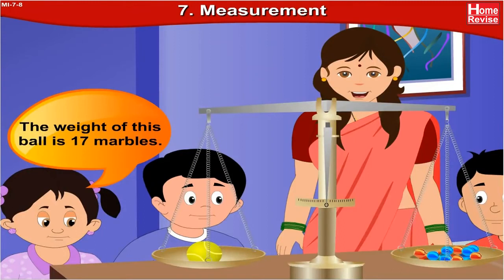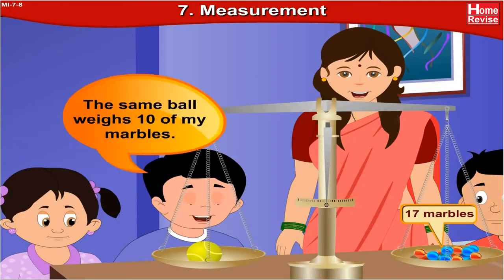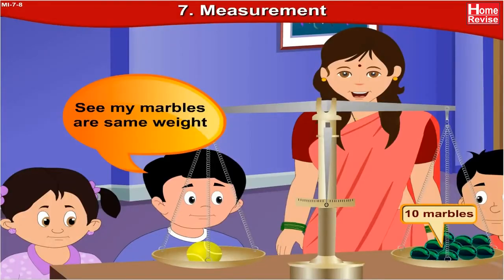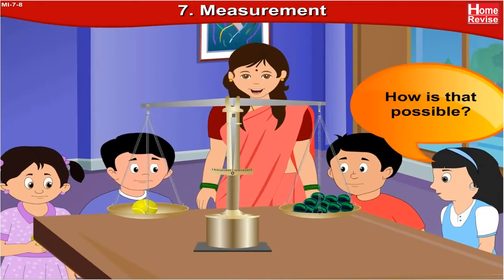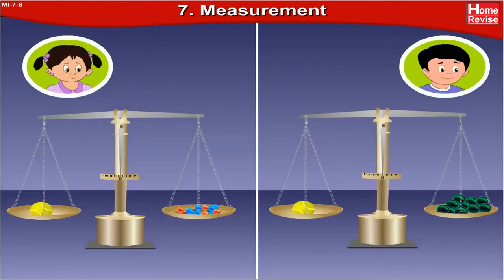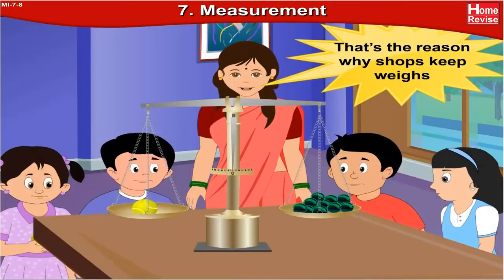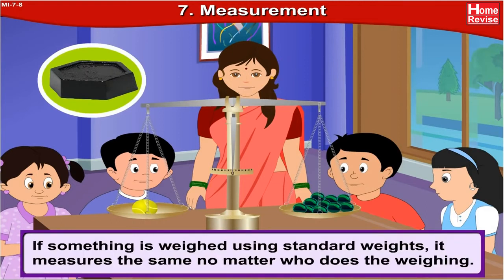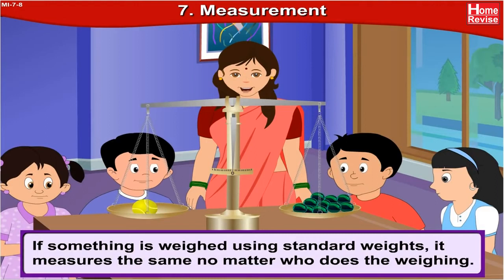The weight of this ball is 17 marbles. But I have different kinds of marbles — the same ball weighs only 10 of my marbles. How can the same ball have different weights? The marbles that Sonu brought were smaller than the marbles that Nandu brought — that's the reason for this confusion. That's why shops keep weights, which are the standard units for measuring weight. If something is weighed using standard weights, it measures the same no matter who does the weighing.